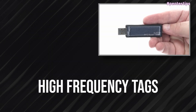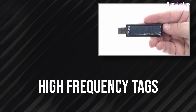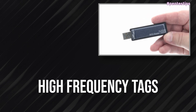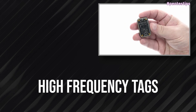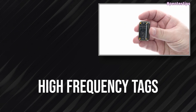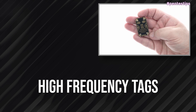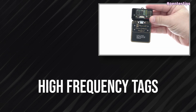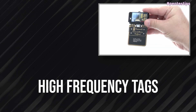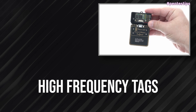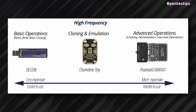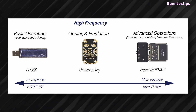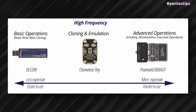For high frequency tags, if you need basic operations — read, write, and clone — your best choice is the DL533N. If you need to emulate tags, your best choice is the Chameleon Tiny. And if you need more advanced operations like demodulate, sniff, analyze, and low-level operations, your best choice is definitely the Proxmark 3. As with LF tools, the devices that cater for more simple operations are easier to learn and use, and are also less expensive.